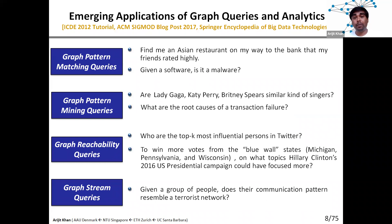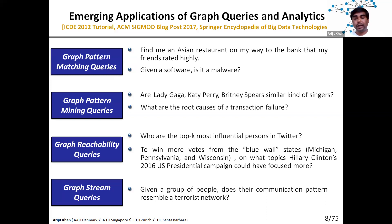We also looked into finding not only the most influential persons but also the most relevant topics to influence a specific group of people. For example, in the 2016 US presidential election, Hillary Clinton lost primarily because of three blue wall states — Michigan, Pennsylvania, and Wisconsin. A different topic of investigation would be: what kind of campaign topics should Hillary Clinton have promoted more to win more votes from those three states? By analyzing the communication pattern of a group of people in graph streams, can you identify suspicious activity resembling some sort of terrorist activities?